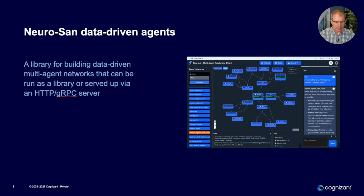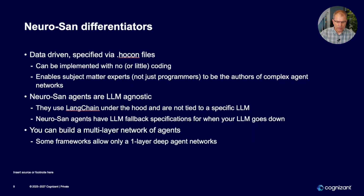Now we're going to talk about Neurosan data-driven agents. It's a library for building data-driven multi-agent networks that can be run either as a library or as an HTTP or gRPC server. The differentiators for Neurosan are: first, it's data-driven — you specify multi-agent systems via HOCON files, meaning you can build multi-agent systems with little or no coding. You don't have to be a programmer; you could be a subject matter expert. Neurosan agents are also LLM agnostic — they use Langchain under the hood, so you can work with a variety of large language models.